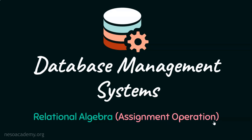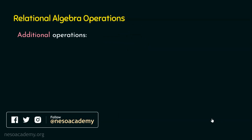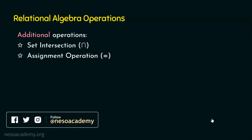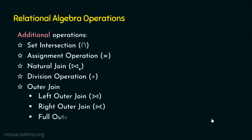There are basically six fundamental relational algebra operations and a few additional operations. The additional operations include the set intersection operation, the assignment operation, the natural join, the division operation, and the outer join operation — which includes the left outer join, right outer join, and full outer join. In this presentation, we are going to focus on the assignment operation.